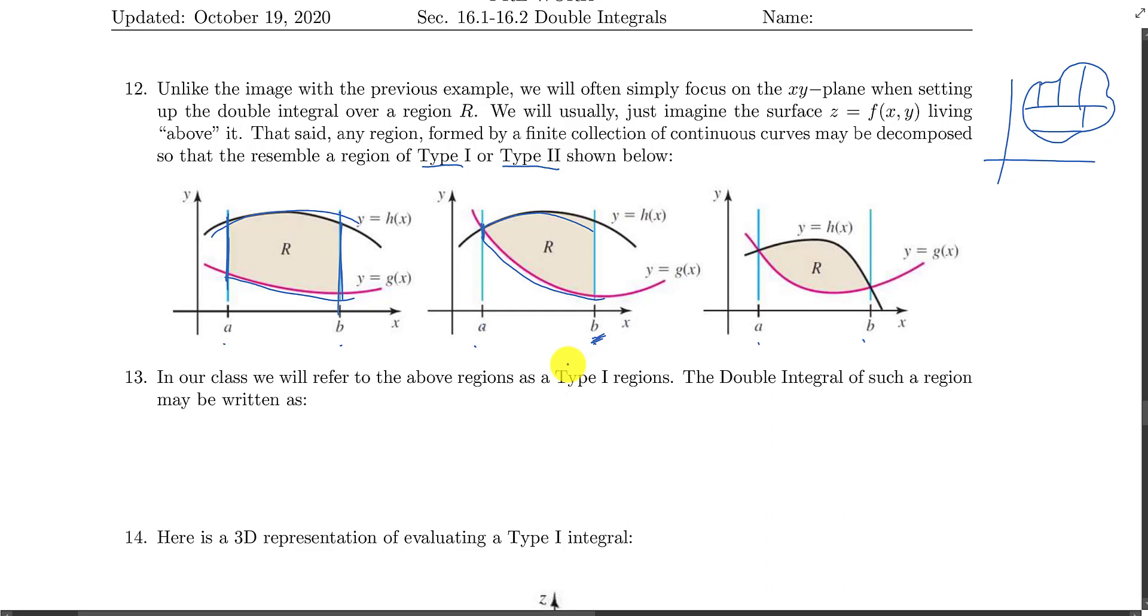Again, this region is really just simply described by having a curve in terms of x and another curve that's given in terms of x, so some function y equals h of x, some function y equals g of x, and we either have a straight line here or simply a point here for the left and right sides of this region. When that's the case, we're going to describe it as a type 1 region.